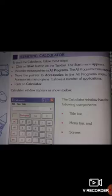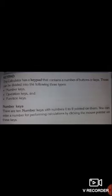The calculator window has 3 following components: number 1, title bar; number 2, menu bar; number 3, screen. The calculator also has a keypad that contains a number of buttons or keys. These can be divided into the following 3 types: number 1, number keys; number 2, operation keys; number 3, function keys.